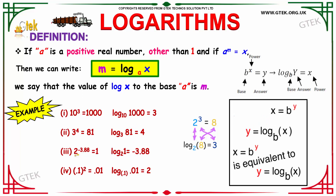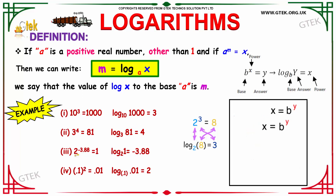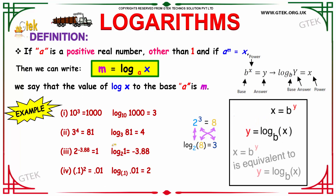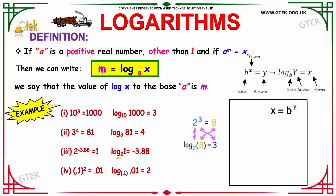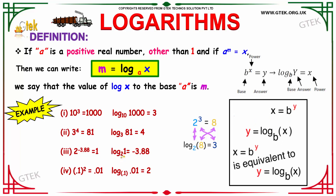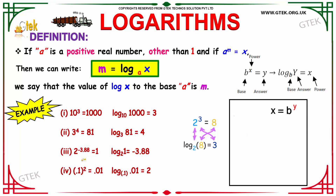Consider our third example. 2 to the power minus 3.88 is equal to 1. It can be written in logarithmic form as log 1 to the base 2 is equal to minus 3.88. That is, 2 raised to the power minus 3.88 is equal to 1.